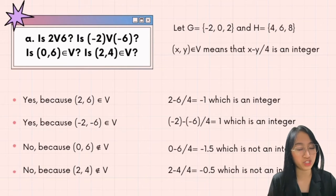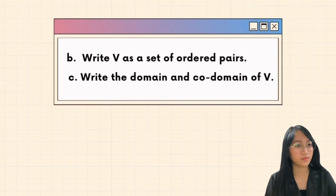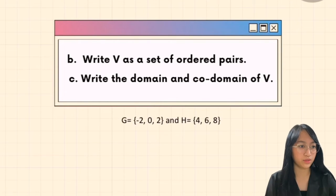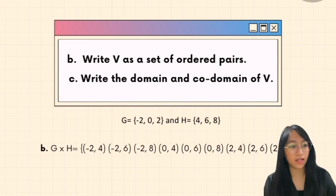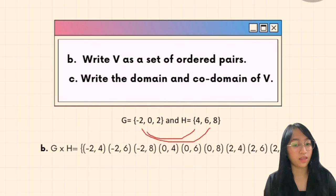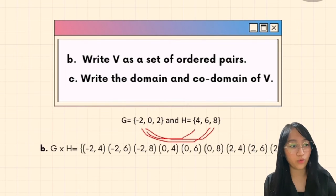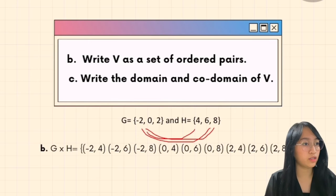For letter B — write V as a set of ordered pairs. Set G equals {-2, 0, 2} and set H equals {4, 6, 8}. Combining them: (-2,4), (-2,6), (-2,8), then (0,4), (0,6), (0,8), and then (2,4), (2,6), (2,8).